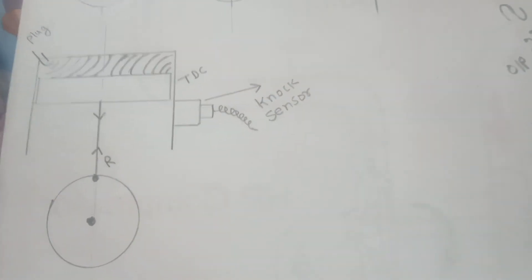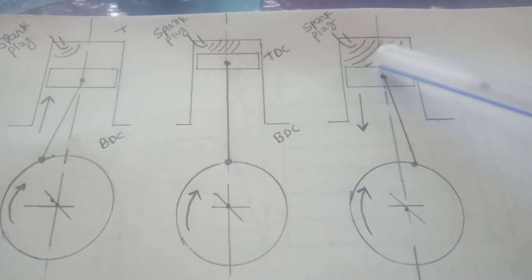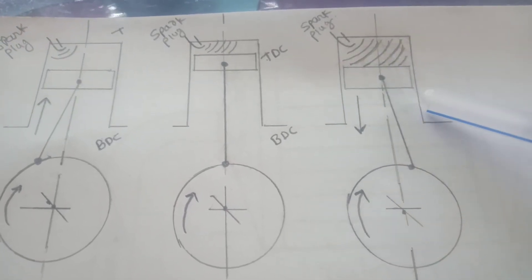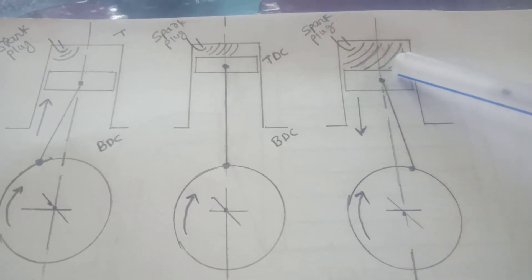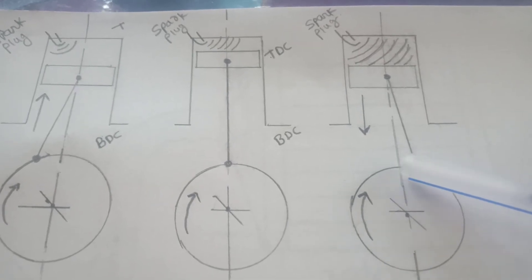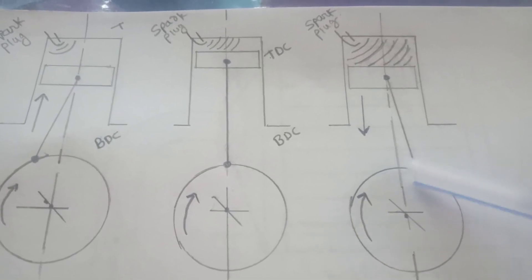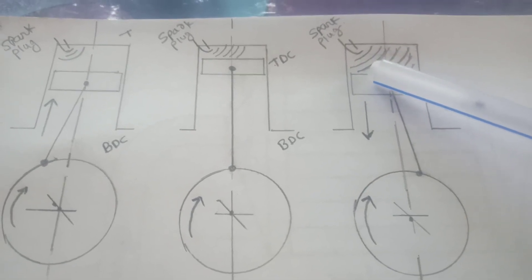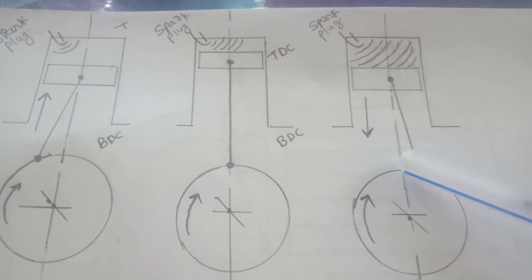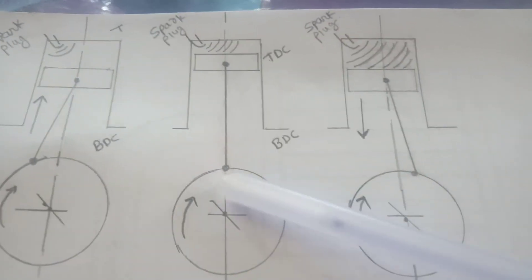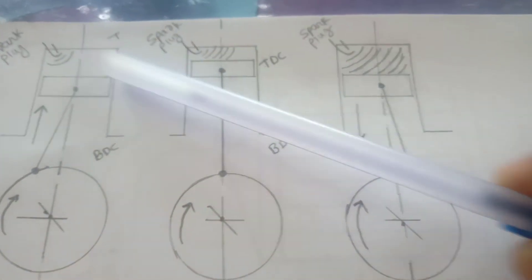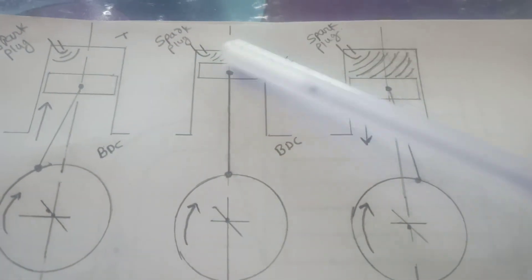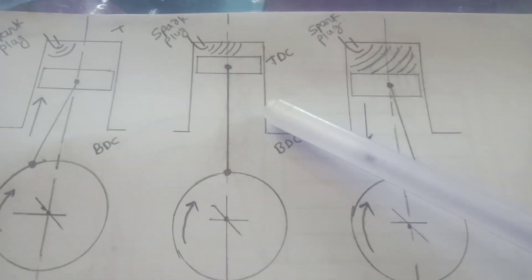The peak pressure should be attained when the piston crosses TDC and just starts moving downward — that is, two to three degrees after TDC. If maximum pressure acts when the piston is at TDC or before TDC, knocking occurs. This is due to wrong ignition timing.